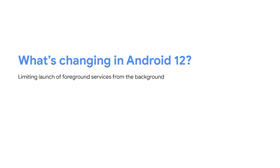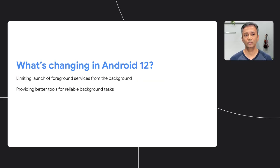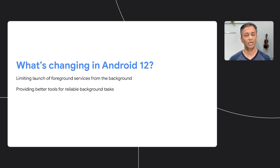After looking at all this data, we came up with a solution and baked it into Android 12. Firstly, we're limiting the situations in which foreground services can be started from the background. This is applicable to apps targeting API level 31 or newer. We also know that there are valid use cases that justified the use of foreground services. That's why we're providing APIs to increase reliability of urgent tasks, as well as carving out some specific exemptions for cases where foreground services may still be the right option.